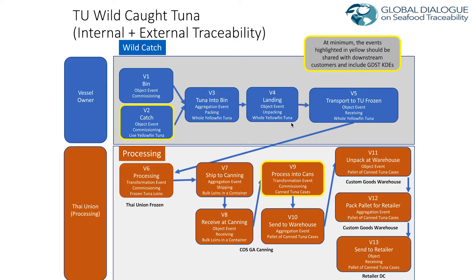Looking at the supply chain we work with — Thai Union — we went from wild-caught tuna harvest all the way through primary processing, secondary processing, and shipping out to the retailer. In this example, we worked with a familiar brand of canned tuna and really understood how data on tuna is captured and how it is conveyed throughout its supply chain.